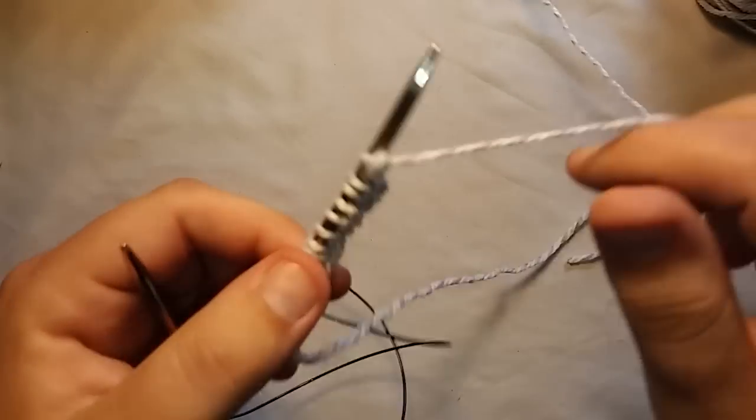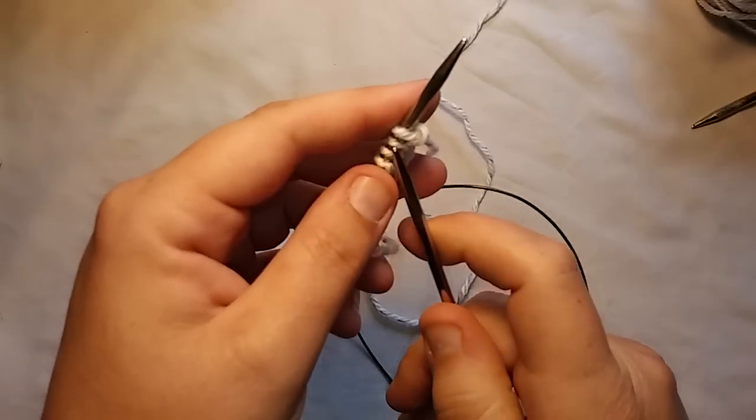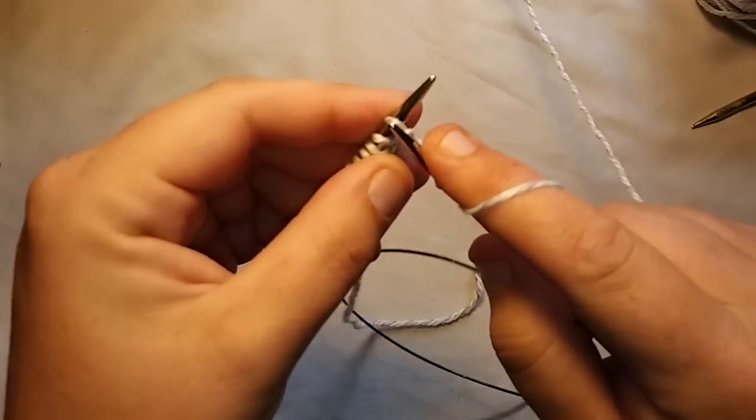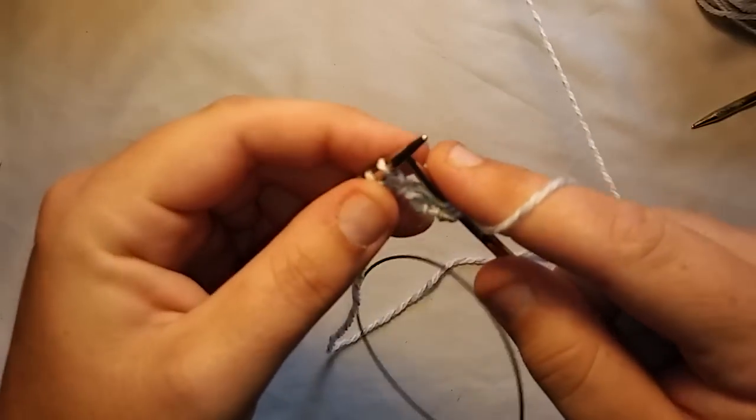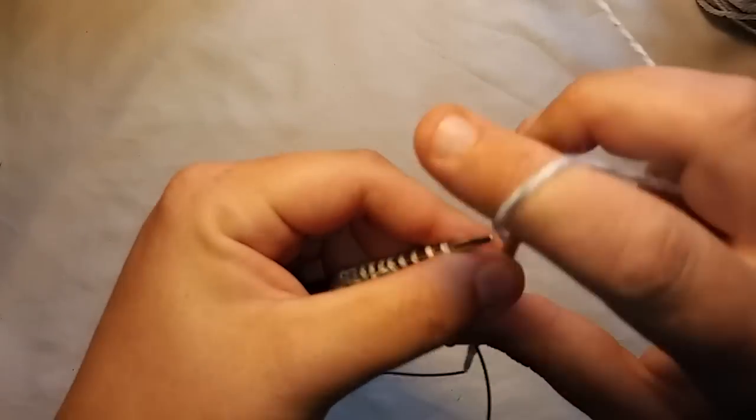That's row one. Row two, exactly the same. It's a knit, knit, knit through the back loop, and a purl.